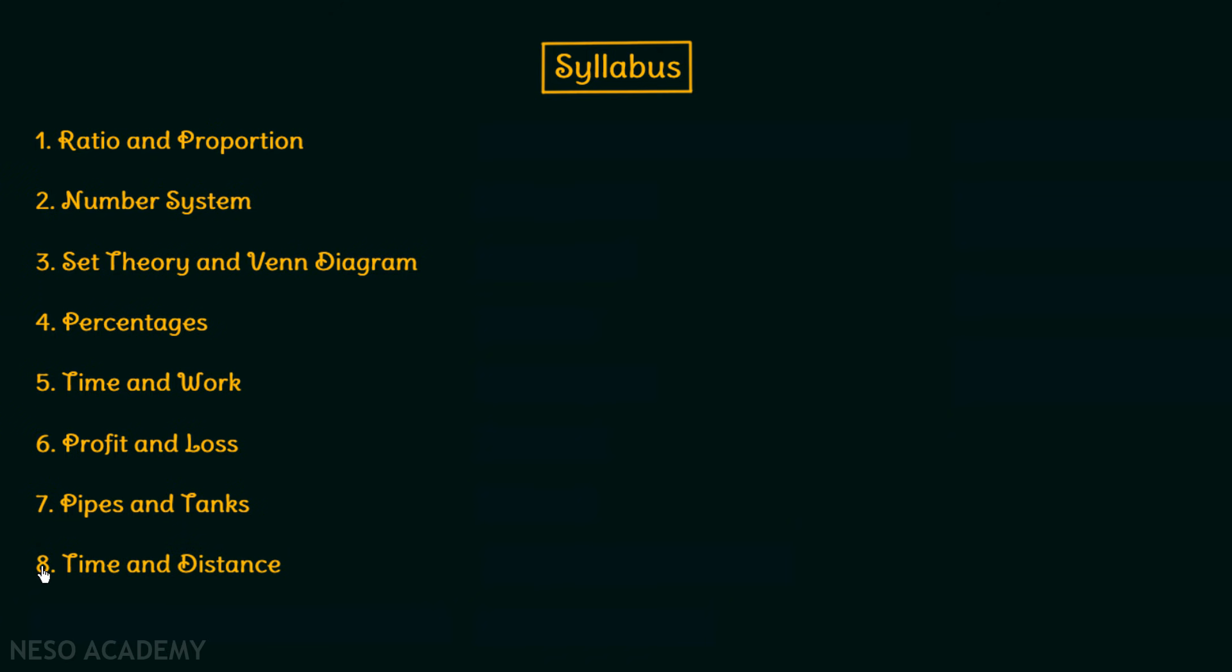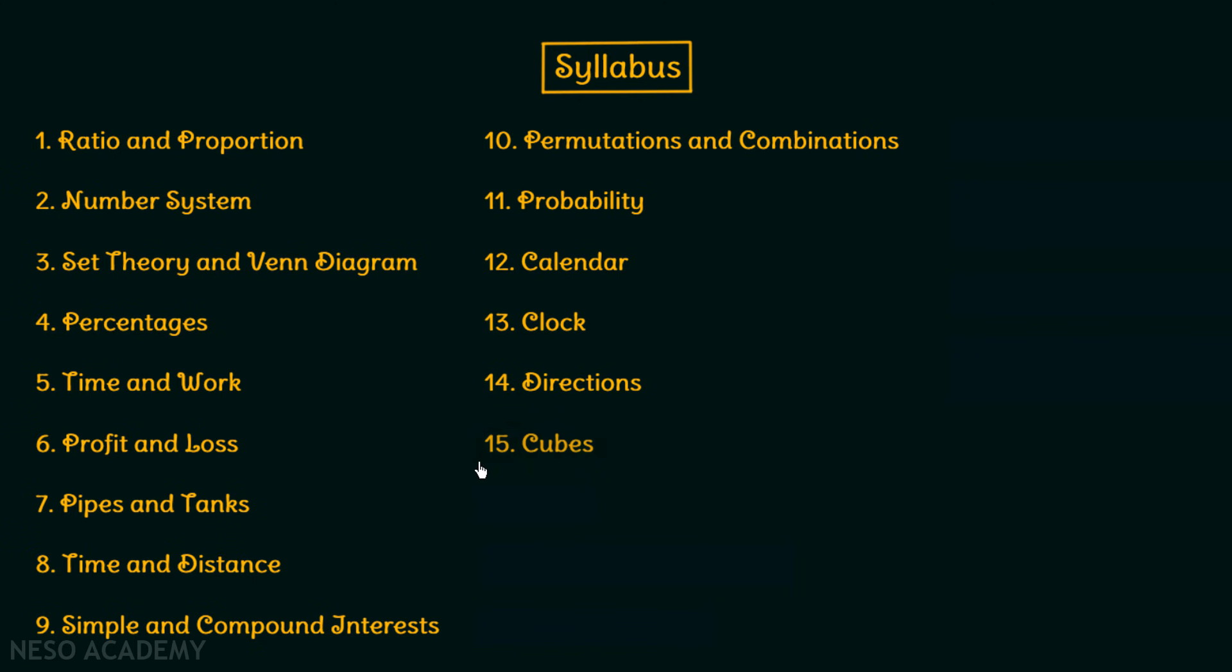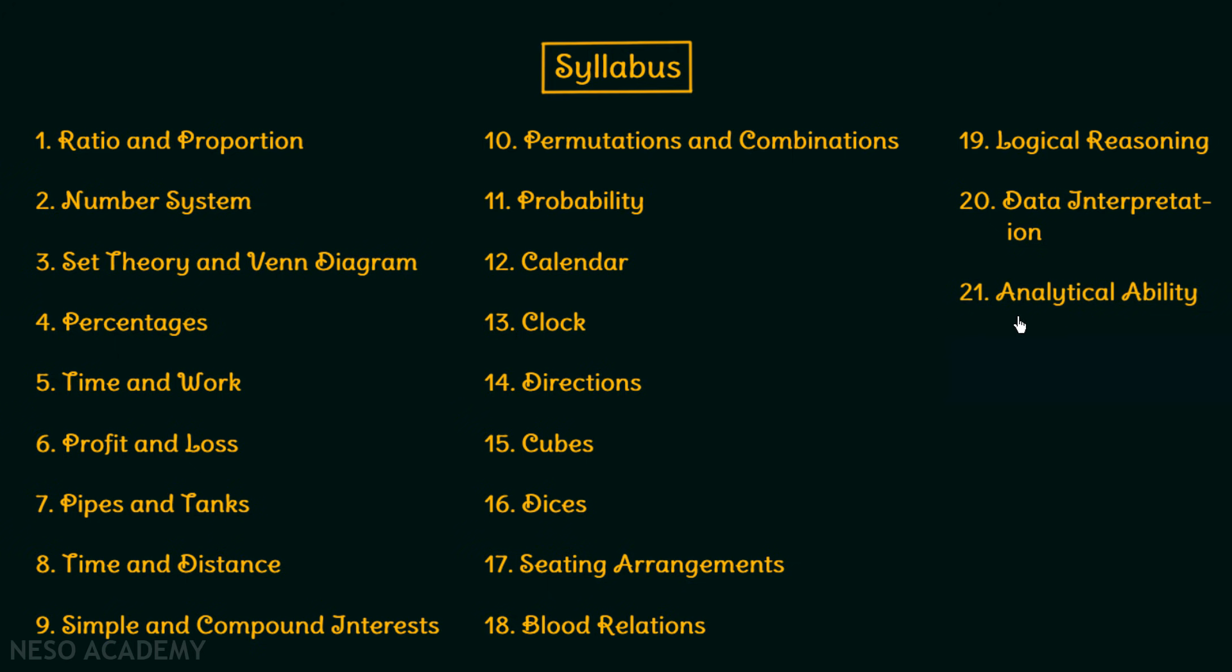I will read out the topics in the syllabus one by one: first is Ratio and Proportion, second is Number System, third is Set Theory and Venn Diagram, fourth is Percentages, fifth is Time and Work, then we have Profit and Loss, after this we will study Pipes and Tanks, eighth one is Time and Distance, ninth one is Simple Interest and Compound Interest, tenth is Permutations and Combinations, 11th is Probability, 12th is Calendar, 13th is Clock, 14th is Directions, 15th is Cubes, then we have Dices, 17th is Seating Arrangements, 18th is Blood Relations, 19th is Logical Reasoning, 20th is Data Interpretation, 21st is Analytical Ability, and the final one is Coding and Decoding.